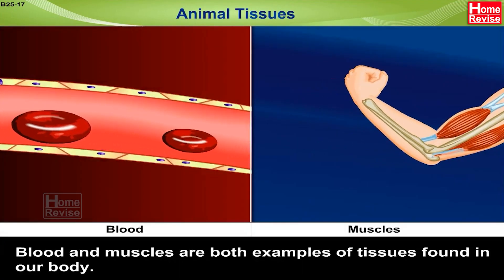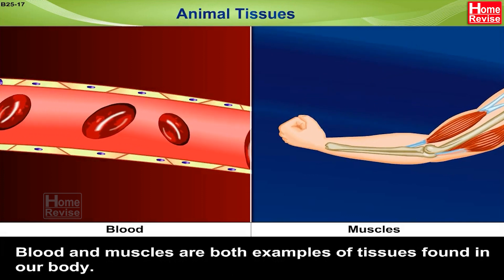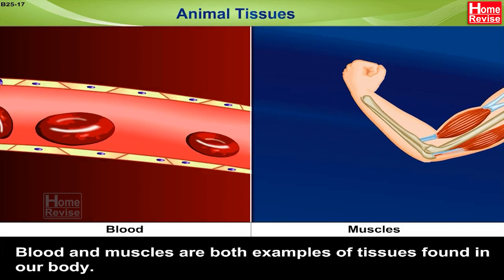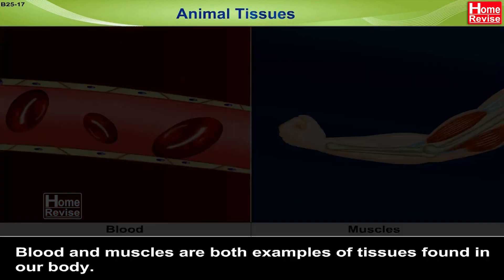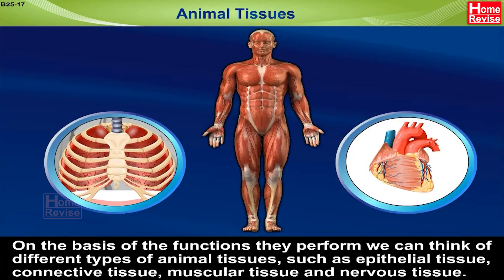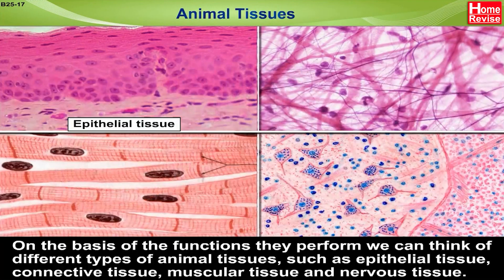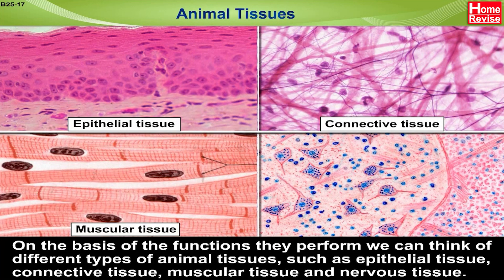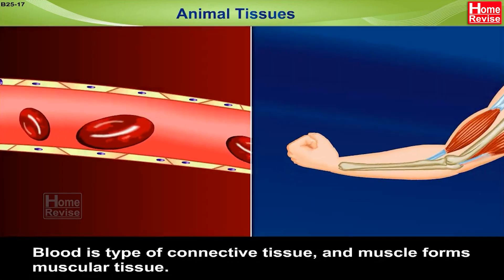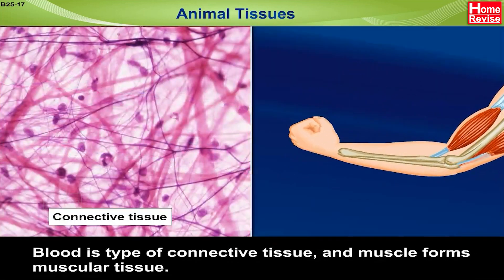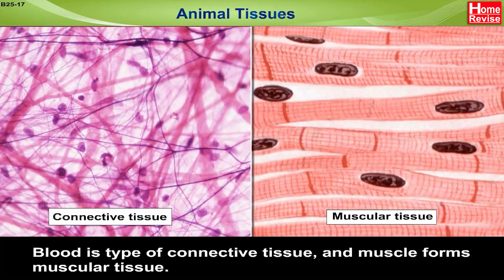Blood and muscles are both examples of tissues found in our body. On the basis of the functions they perform, we can think of different types of animal tissues such as epithelial tissue, connective tissue, muscular tissue and nervous tissue. Blood is a type of connective tissue and muscles form muscular tissue.